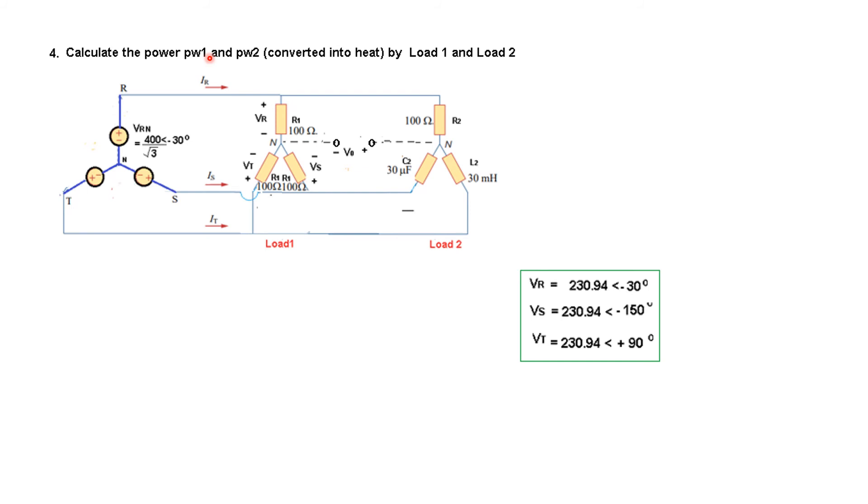The next question is to calculate power P1 and P2 consumed by each load. For load one, since this is balanced with the same resistance, the total power is three times the power of one phase. P1 = 3 × VR²/R. VR is 231, so P1 = 3 × (231)²/100 = 1600 watts.